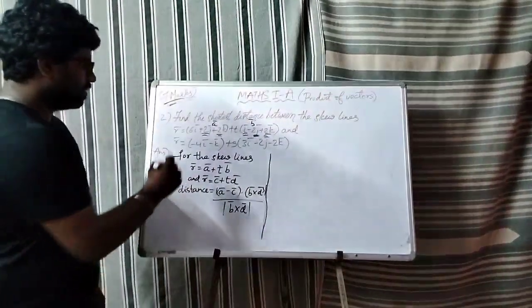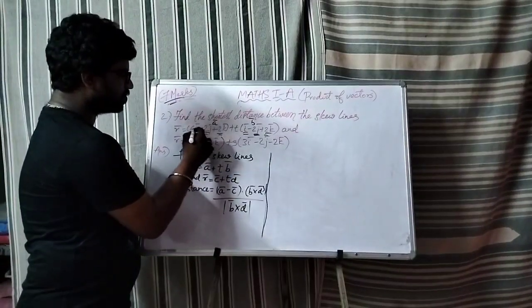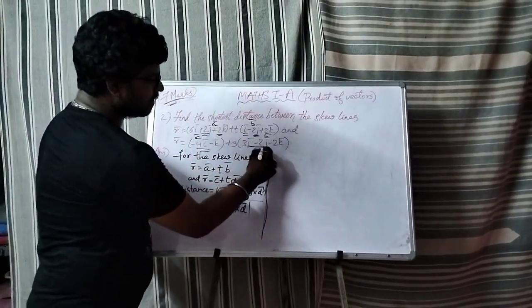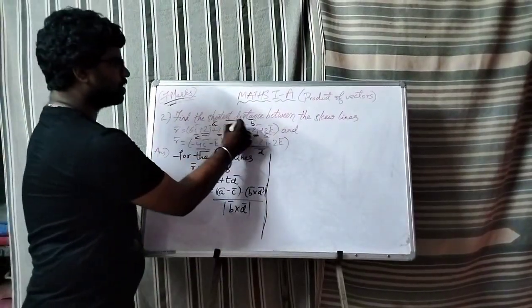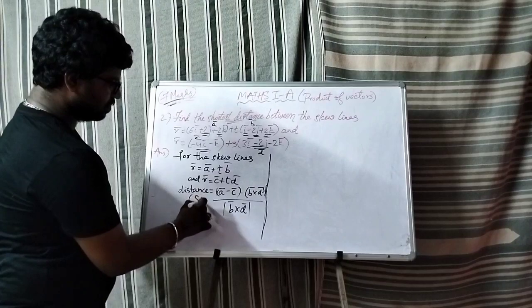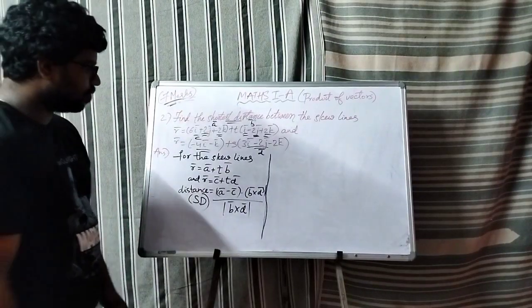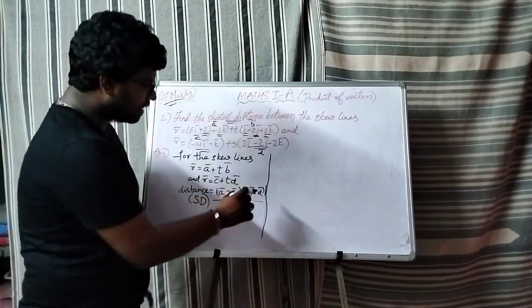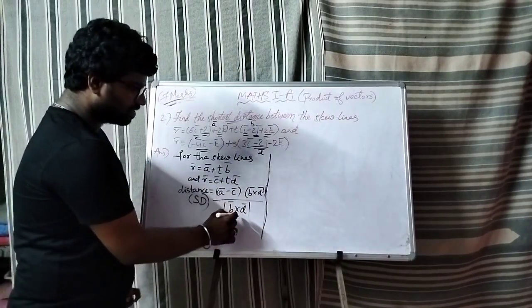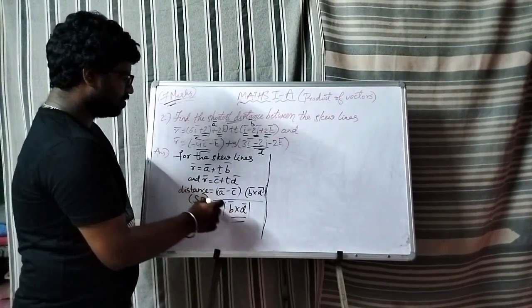And similarly we call this c bar and this d bar. So here we need to find shortest distance, which is nothing but sd. The formula is a bar minus c bar dot b bar cross d bar by modulus of b bar cross d bar.